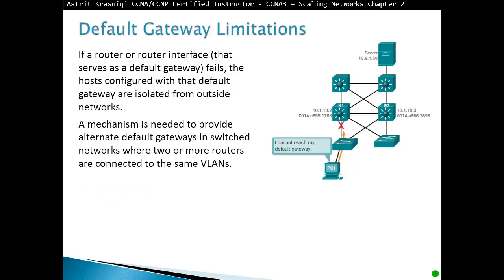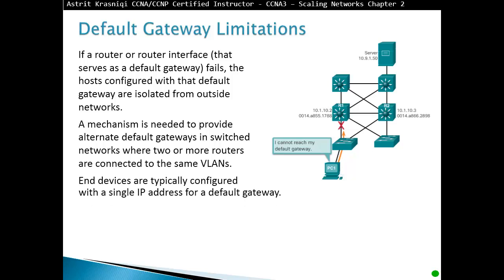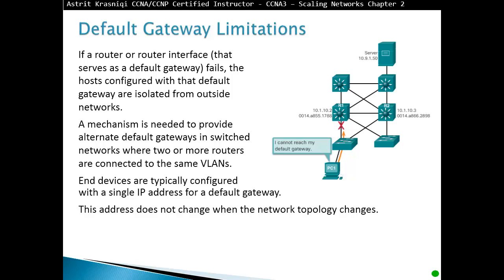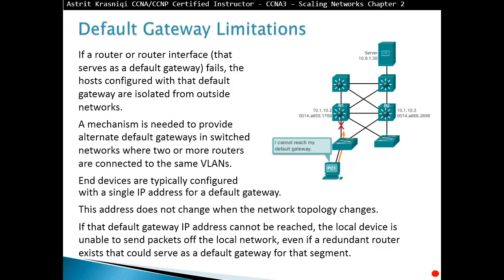A mechanism is needed to provide an alternate default gateway in switched networking where two or more routers are connected to the same VLANs. End devices are typically configured with a single IP address for the default gateway, and this address does not change when the network topology changes. If that default gateway IP address cannot be reached, the local device is unable to send packets off the local network, even if a redundant router exists that could serve as a default gateway for that segment.